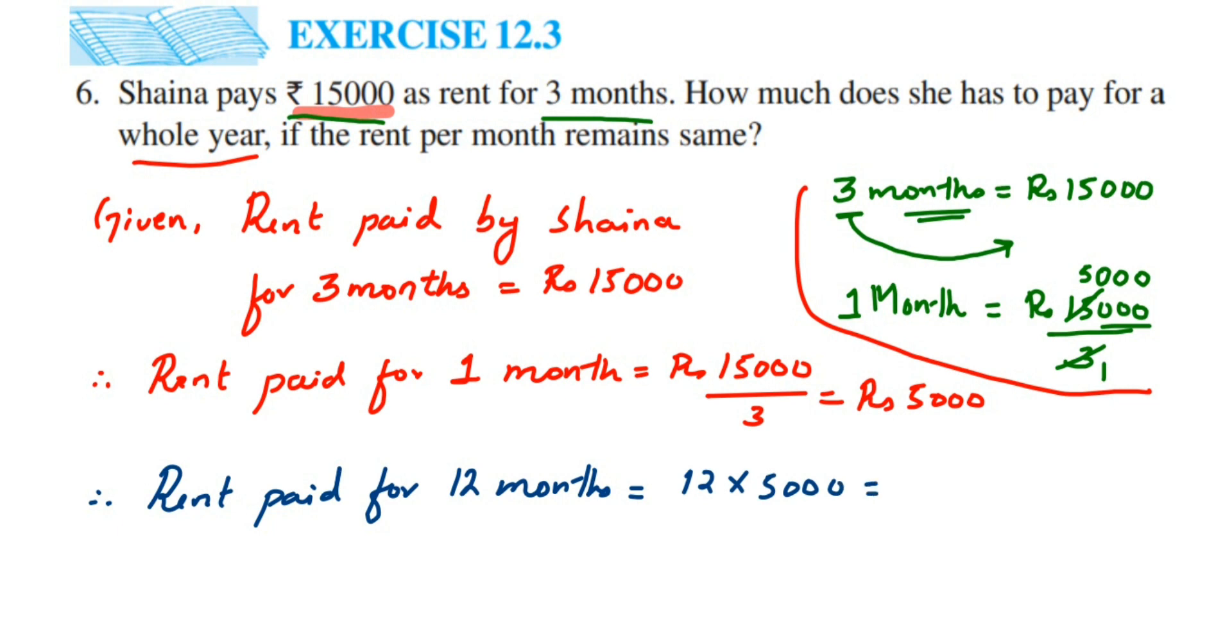So 12 times 5 is 60, and there are three zeros, so 60,000. She's paying 60,000 rupees as rent for the whole year. So that's it, I hope this question is clear.